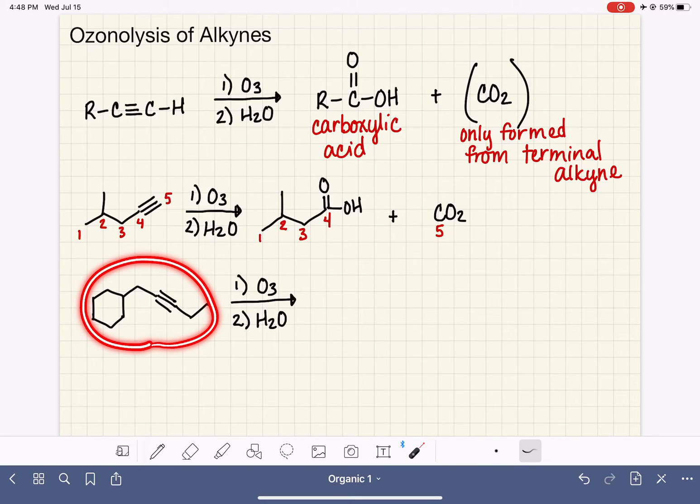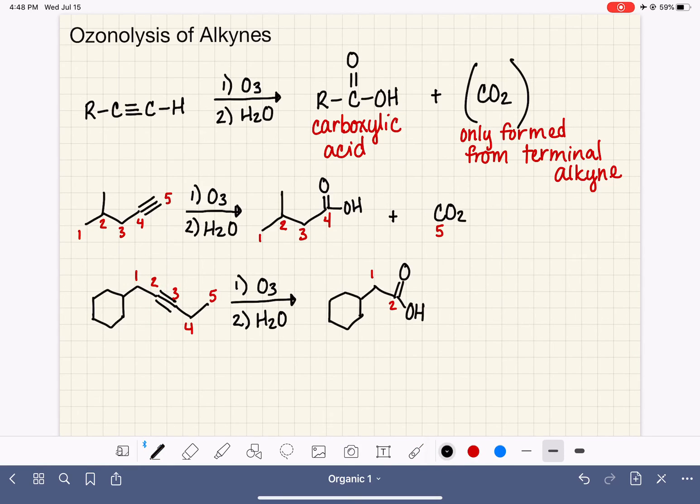This is an internal alkyne. And when we do this reaction with an internal alkyne, we don't make any CO2 at all. I'm going to number this carbon chain. So when we split this molecule in half, we split it so that one half gets carbons one and two. And carbon number two, being part of the alkyne, is the location of the carboxylic acid functional group.